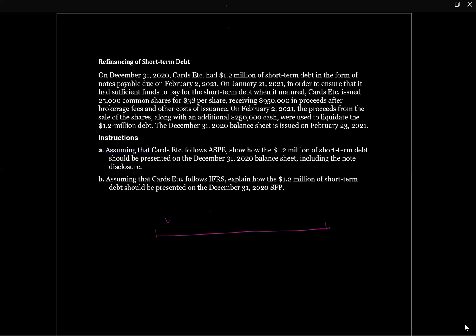The first date we have is December 31st, and this is the financial statement date. They had $1.2 million of short-term debt in the form of notes payable. These notes are due on February 2nd, so they're due in less than 12 months. This would be a short-term obligation, right off the bat.